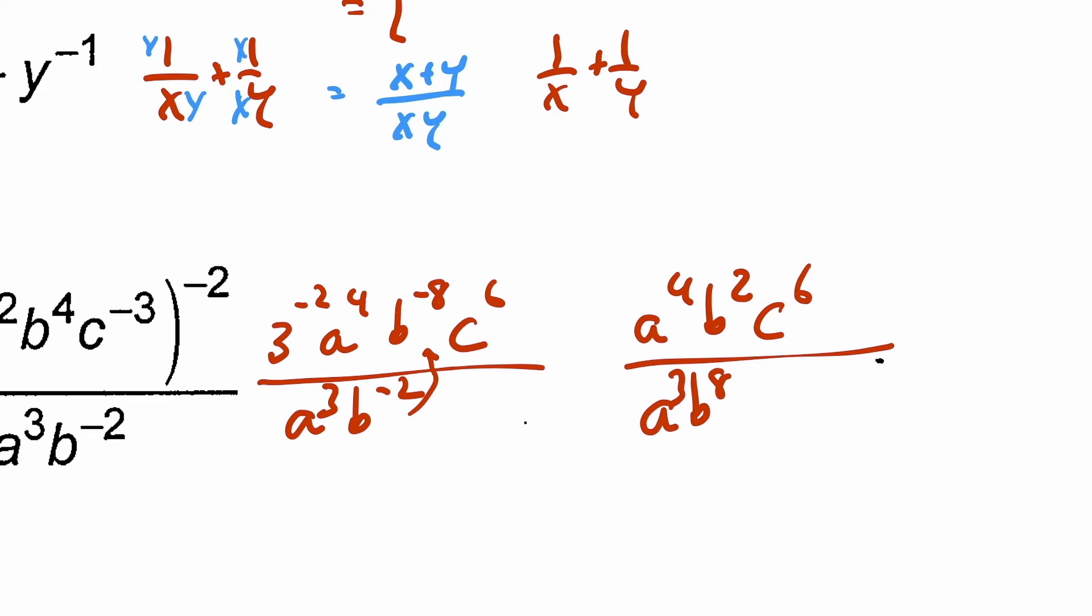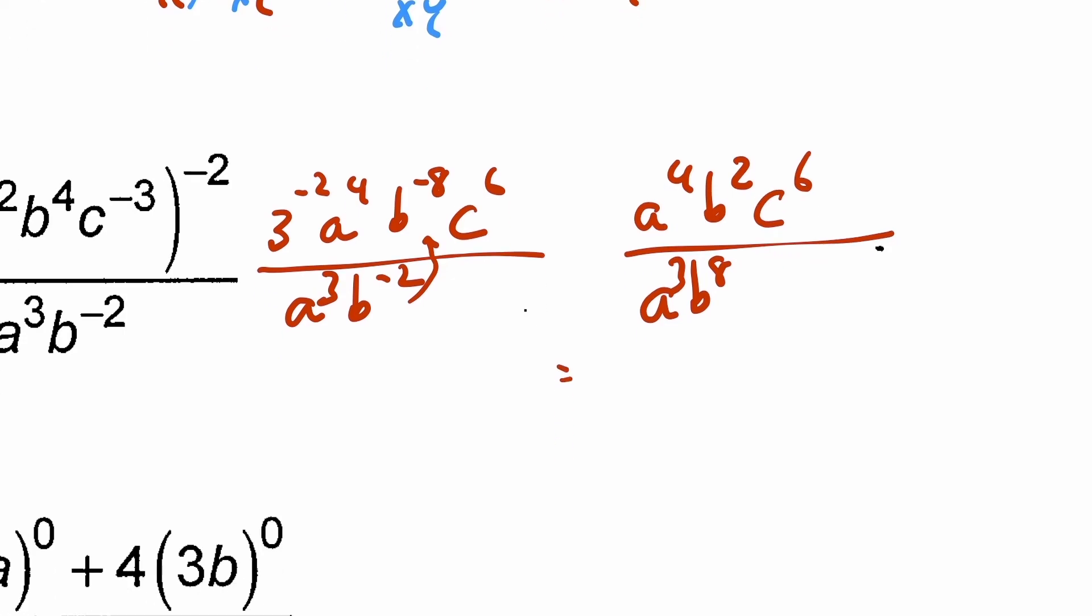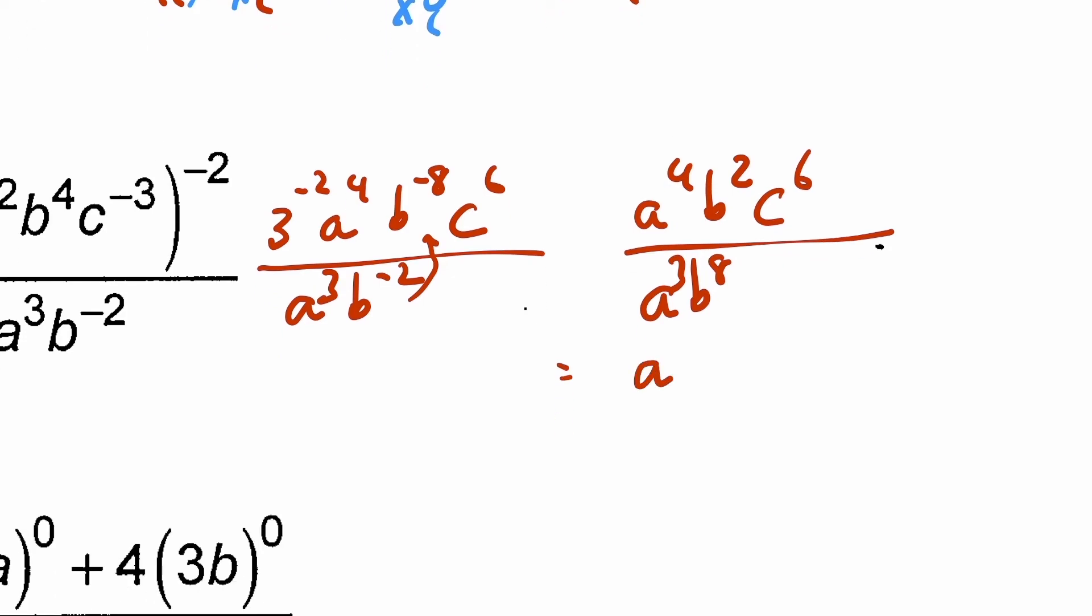I have a to the four over a to the three. So that's going to subtract the exponents. That's going to give us a to the one. I'm not going to write the one. b to the two over b to the eight. b to the eight is larger. So the answer is going to go to the bottom. And then eight minus two is six. So b to the six, and then c to the six.